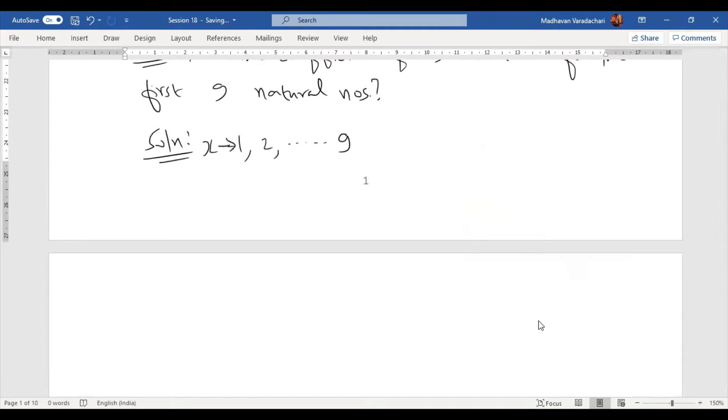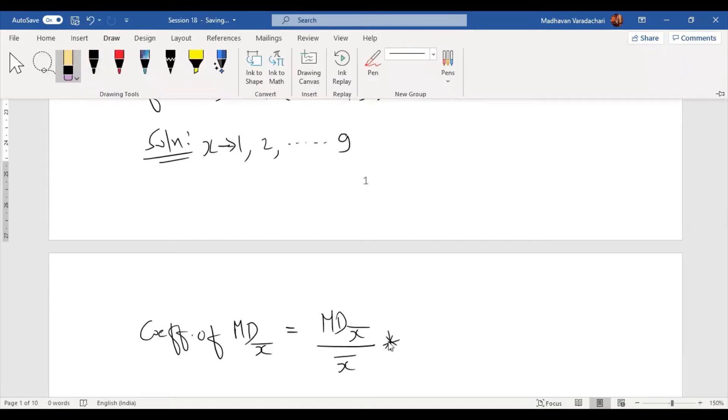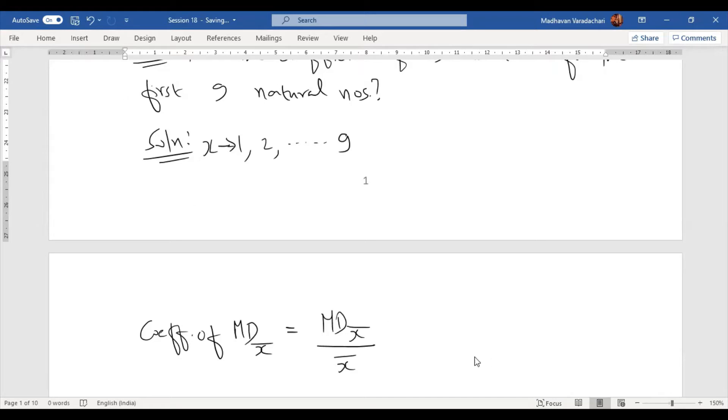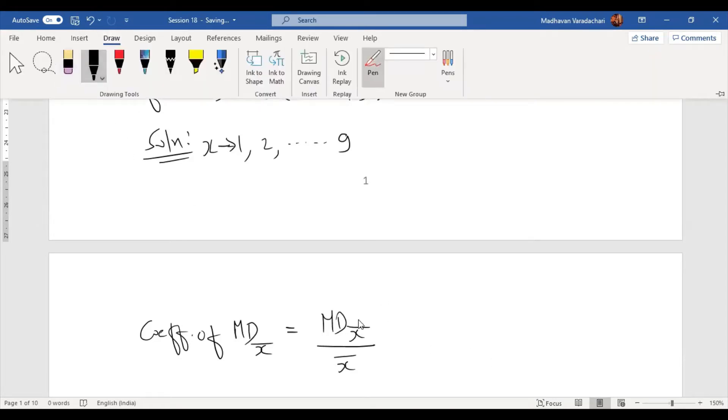Now, what is coefficient of mean deviation about mean? Coefficient of mean deviation about mean is equal to mean deviation about mean divided by mean. That is only if it is asked in percentage; otherwise you can simply write mean divided by mean. If it is asked in percentage, I will be multiplying it by 100 here. They didn't specify anything, so I can keep it as is.